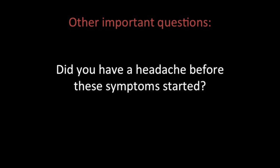Did you have a headache before these symptoms started? One thing we worry about that you can't really diagnose in the field is a bleed in the brain — subarachnoid hemorrhage or some other bleed — which might make this person not a candidate for TPA. The last thing we want to do when someone's bleeding in their brain is give them a clot-busting medication, because then they tend to bleed more and die. So if someone said they had a terrible headache right before the symptoms started, we're definitely going to wait for that CT and look very closely.